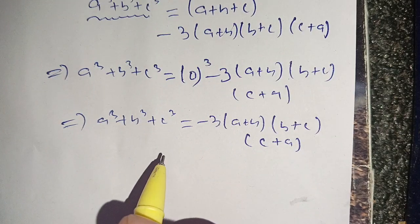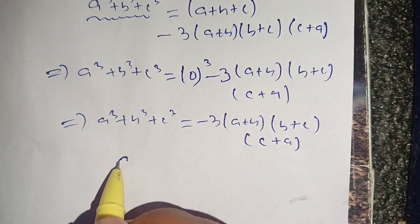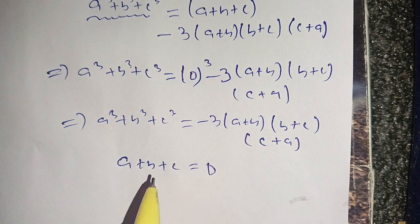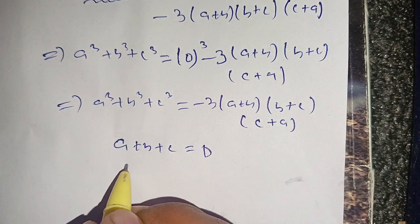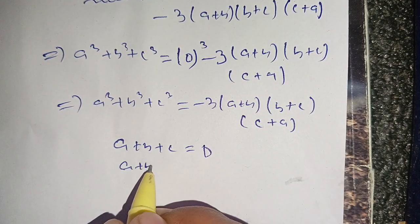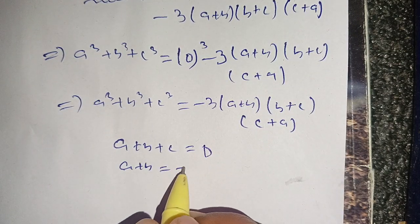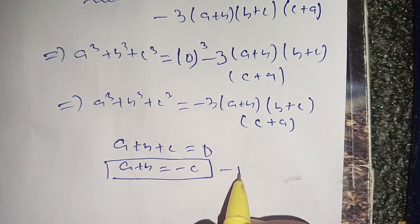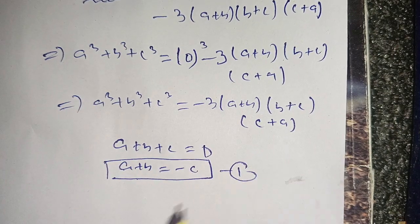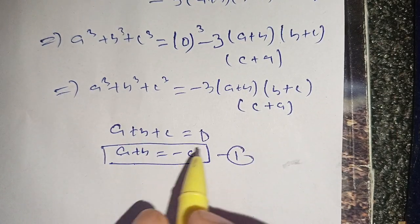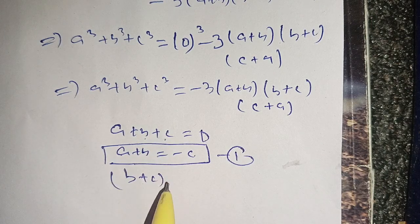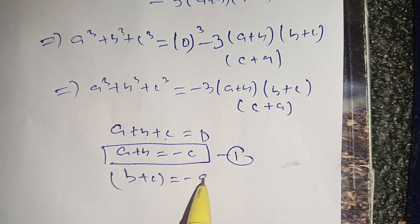Now, since a plus b plus c is equal to 0, we get: a plus b is equal to minus c — this is our first equation. And b plus c is equal to minus a — this is our second equation.